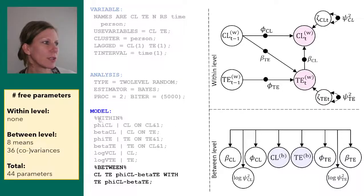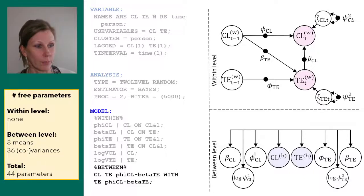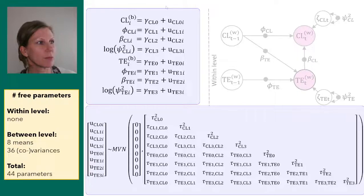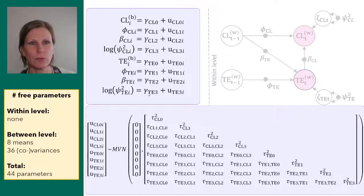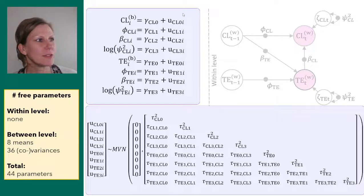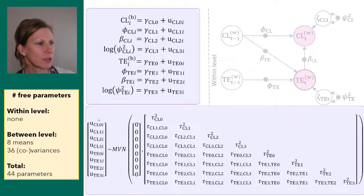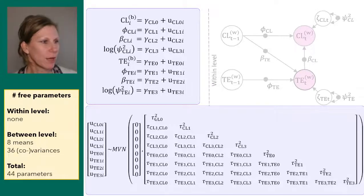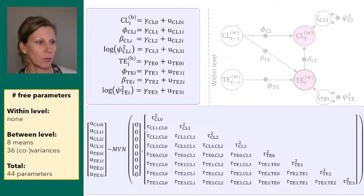The number of parameters being estimated here is 44 in total, all at the between level. We have eight random effects, each with a mean across individuals — sometimes called fixed effects, though that terminology is confusing across disciplines. There is a person-specific deviation with a subscript i. These person-specific deviations are allowed to be correlated and come from a multivariate normal distribution with means of zero, since they are residuals, and an eight-by-eight covariance matrix with 36 unique elements — eight variances and a set of covariances.